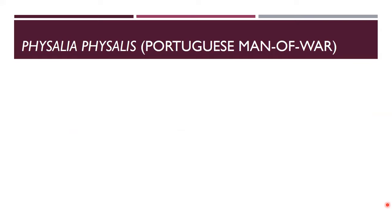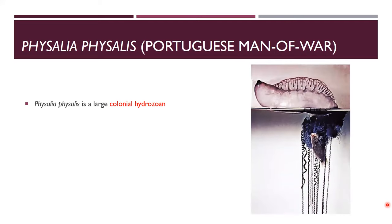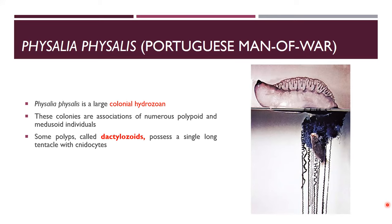Physalia is commonly known as the Portuguese man-of-war. It is a large colonial hydrozooan with numerous polypoid and medusoid individuals. The polyps are called dactylozooids, and each has a single long tentacle with many cnidocytes.